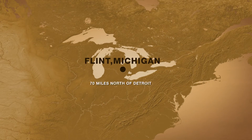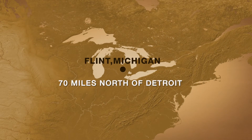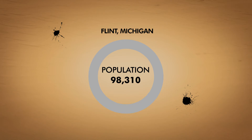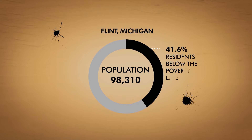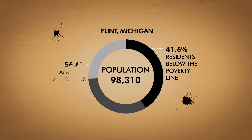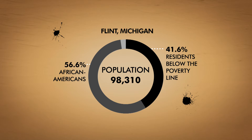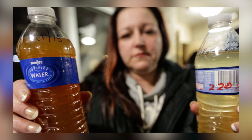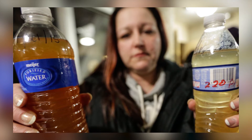Located in the state of Michigan, 70 miles north of Detroit, you'll find the town of Flint. Population 98,310, where 41.6% of residents live below the poverty line and 56.6% of residents are African American. It's here where it seems dollars were chosen over lives.